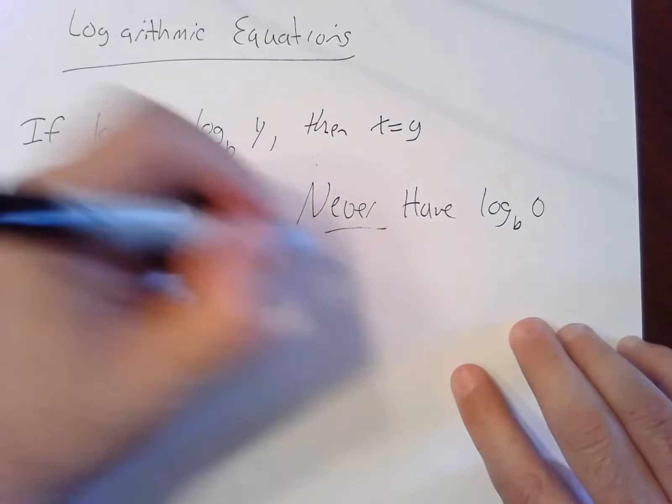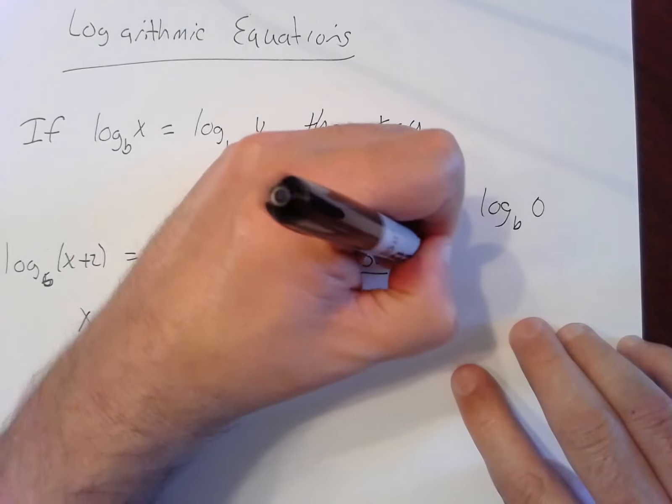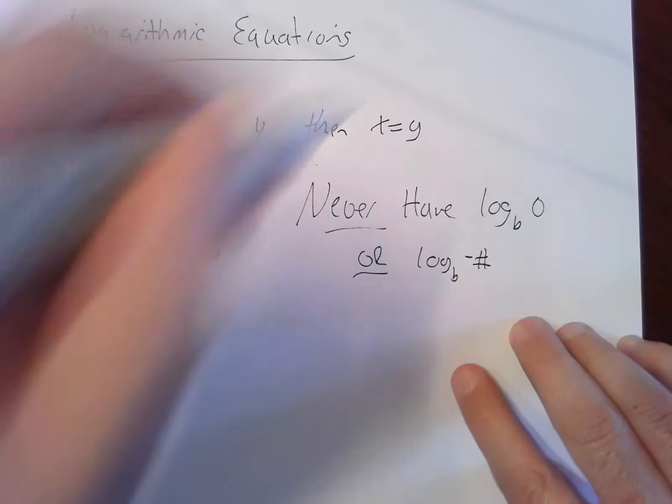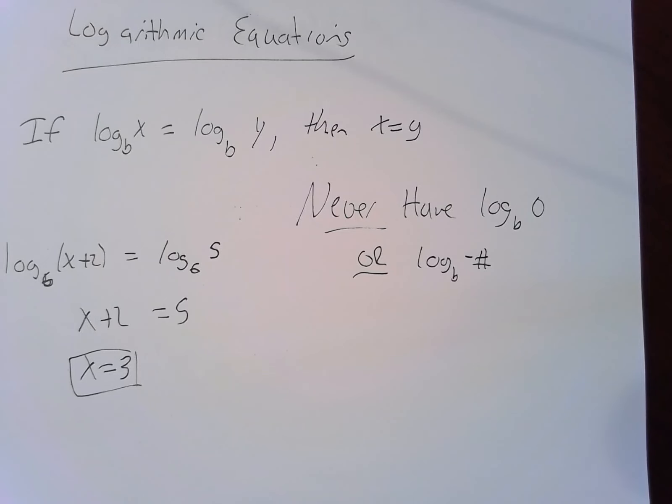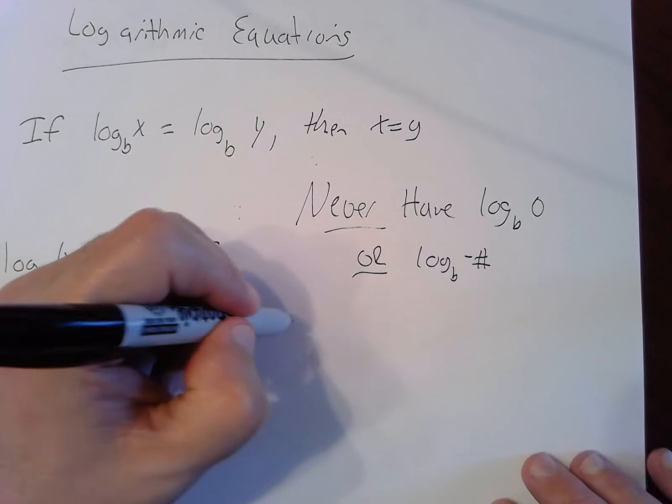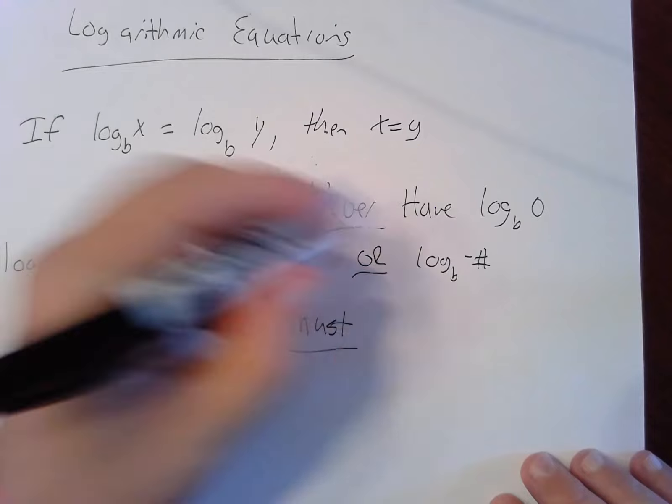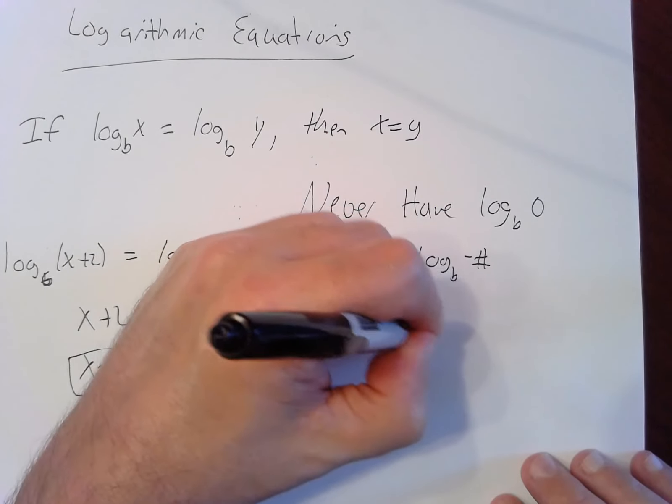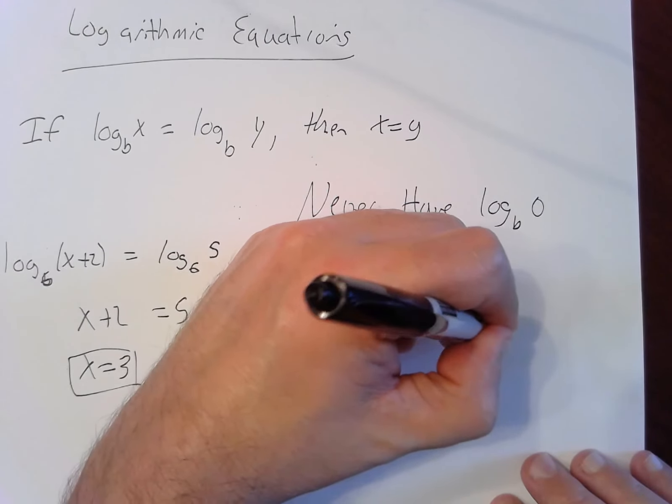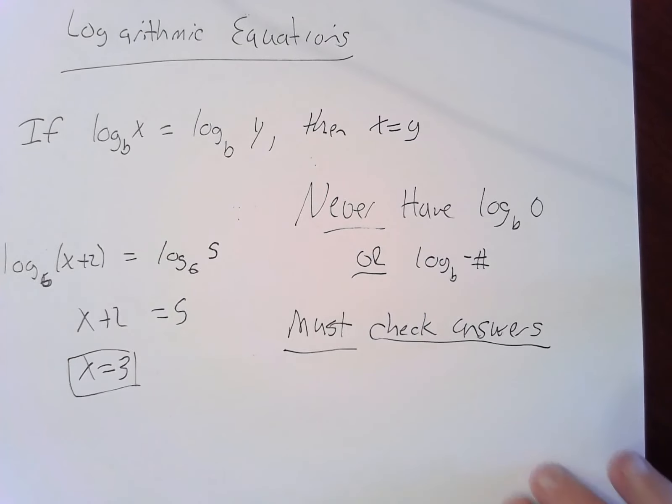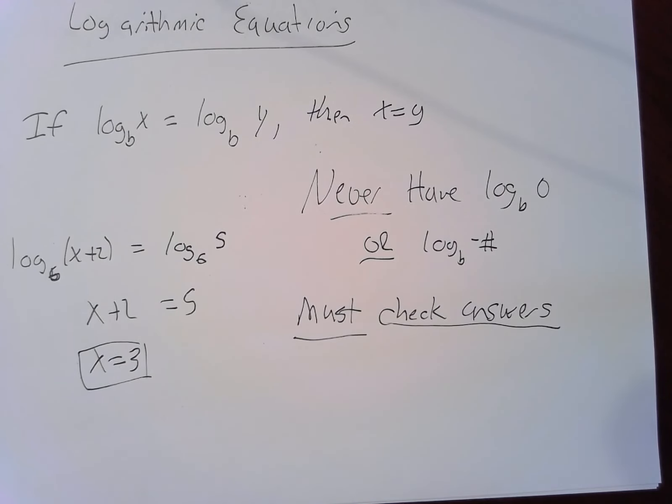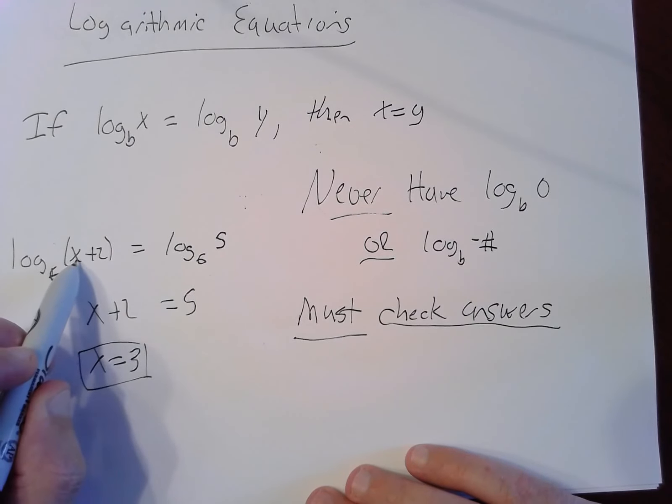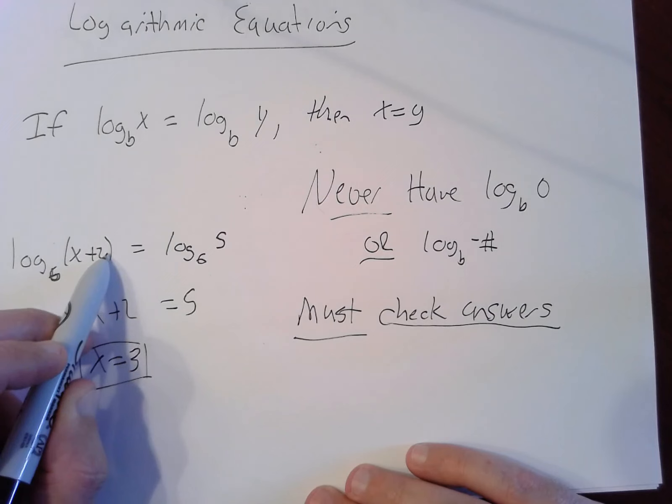Now logs have domain issues. You can never have log any base, I don't care what your base is, zero or log any base of a negative number. So we must always check answers and make sure that they fit in the domain of all of our logs. If I plug in x equals three here on the left, three plus two is five. I'm allowed to take log of five, no issues.